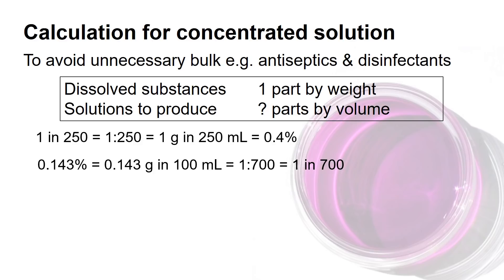I would like to introduce two new expressions of units. The first one is '1 in a number' — for example, 1 in 250 means 1 gram in 250 ml. This can also be expressed in ratio form as 1:250, giving you the same meaning.